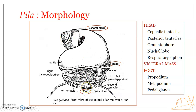The head and foot are bilaterally symmetrical parts of the body, while the visceral mass undergoes torsion and hence is spirally coiled and asymmetrical. The visceral mass always remains within the shell, while the head and foot are often projected out. When moving, the foot is projected out, and you may have seen the eyes and tentacles of Pila projecting out of the shell.